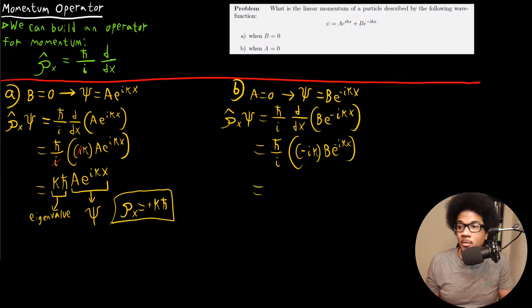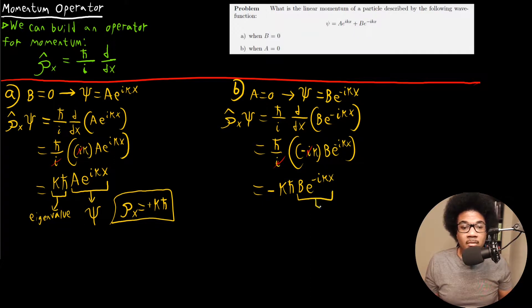Again, here we get a little bit of cancellation. These i's cancel out, but the negative sign still sticks around. So we got negative KH bar B e^(-ikx). Here again, we get the wave function back again. We get this as the eigenvalue, negative KH bar. So in this case, the momentum is negative KH bar.